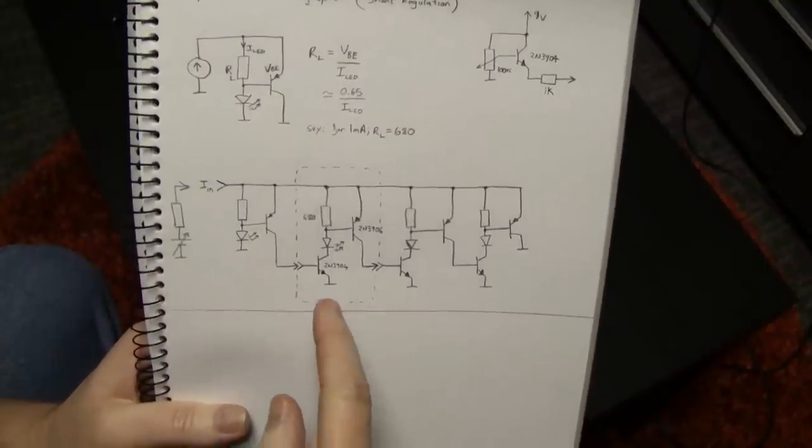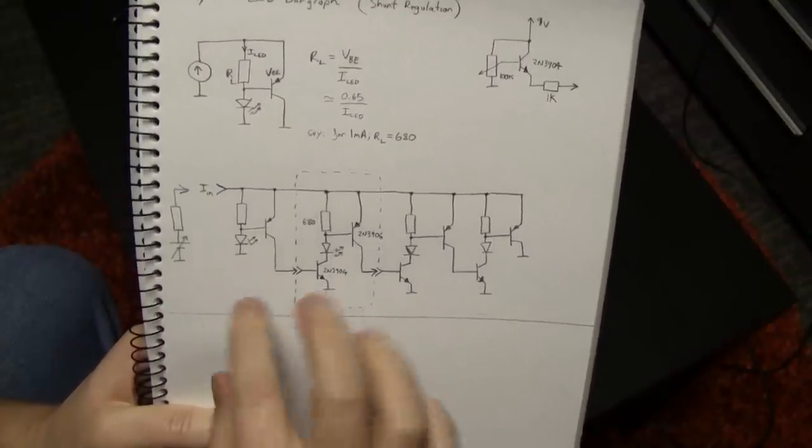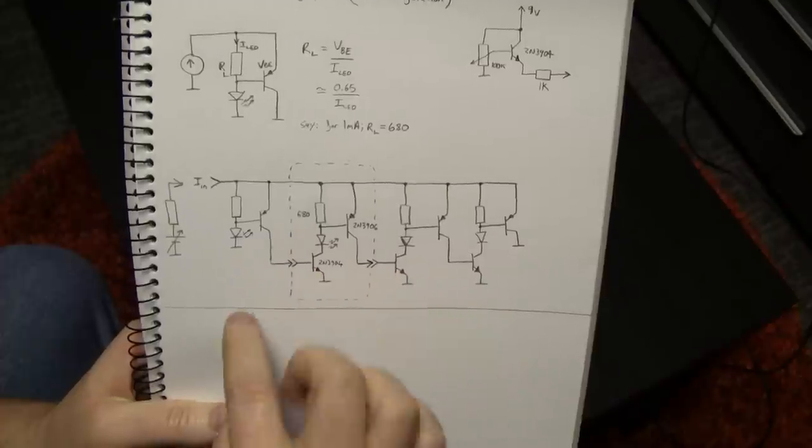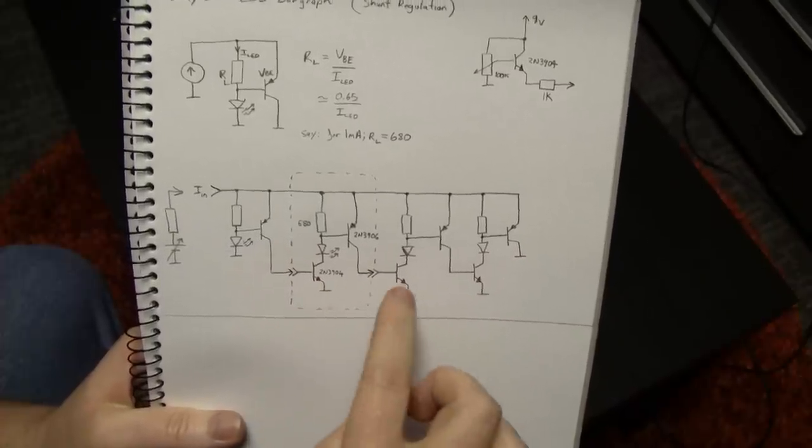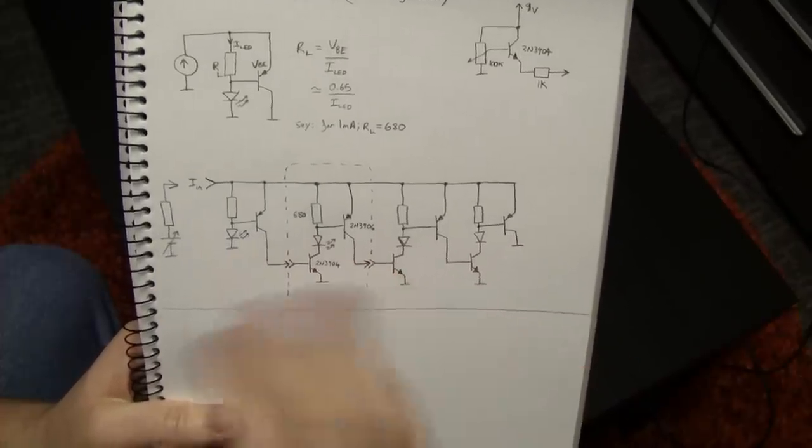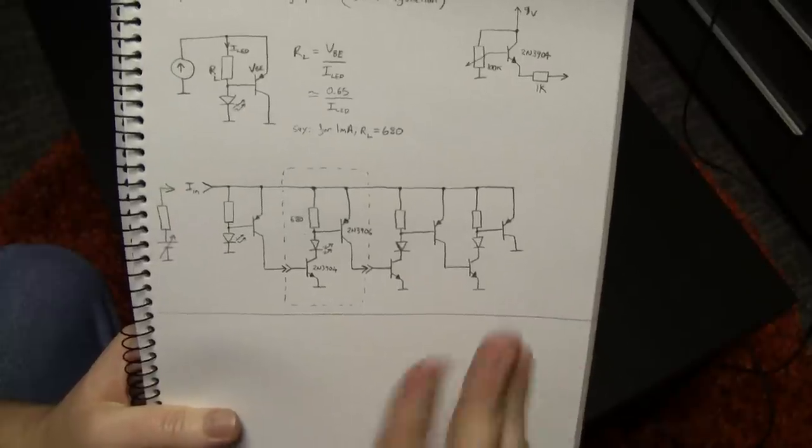And they'll light up in sequence. So this LED will come on, then this LED, then this LED. There'll be some region of transition where this circuit is still starting to saturate and this one's just starting to turn on. But the result's very fluid and it works pretty well as a display.